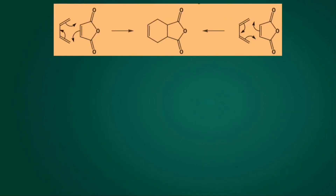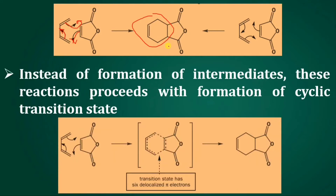Let's take a very famous example of a pericyclic reaction: the Diels-Alder reaction. There is a cyclic shift of electrons — this electron goes here, this electron goes here, and this electron shifts here. So there is a cyclic shift of electrons and it forms a ring compound. The Diels-Alder reaction proceeds with a cyclic transition state; there is no formation of intermediate at all in pericyclic reactions.